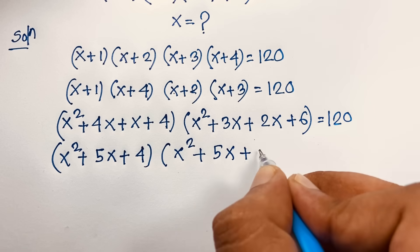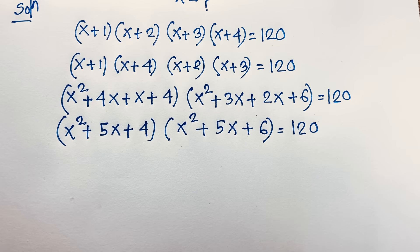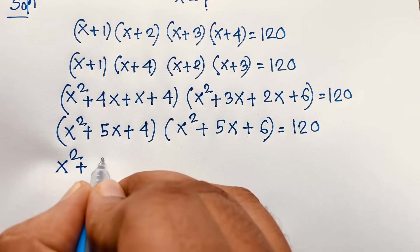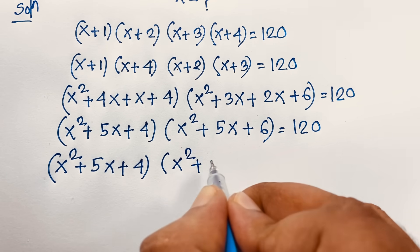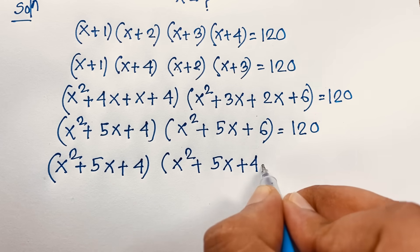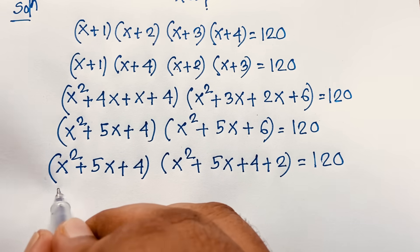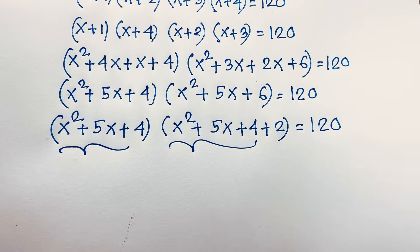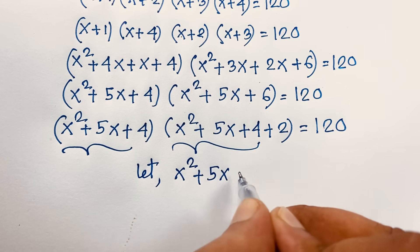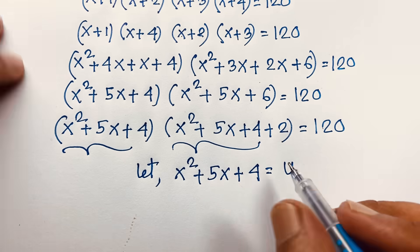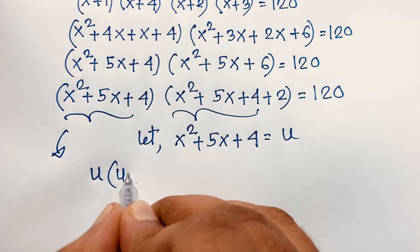We now have two quadratic expressions: (x² + 5x + 4) and (x² + 5x + 6). We can write x² + 5x + 6 as (x² + 5x + 4) + 2. Let u = x² + 5x + 4, so the expression becomes u(u + 2) = 120.